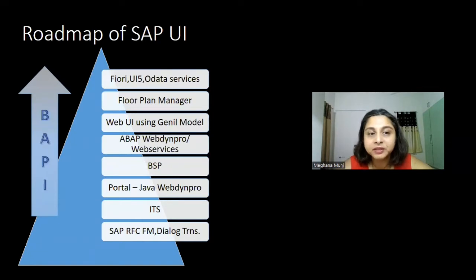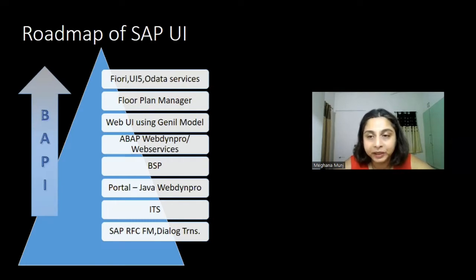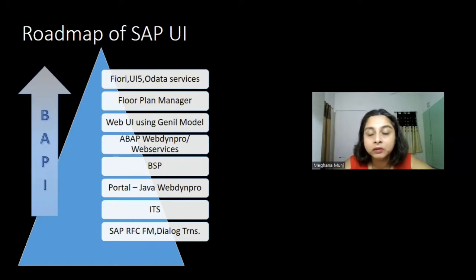In our previous video we saw the roadmap for SAP UI, which discussed the journey of SAP from SAP RFC function modules or any transaction up to SAP OData services, UI5, or Fiori apps. Throughout this technology advancement which SAP has done, there is one thing which has always been common — to update the data back into SAP, which is BAPIs, the Business APIs provided by SAP.